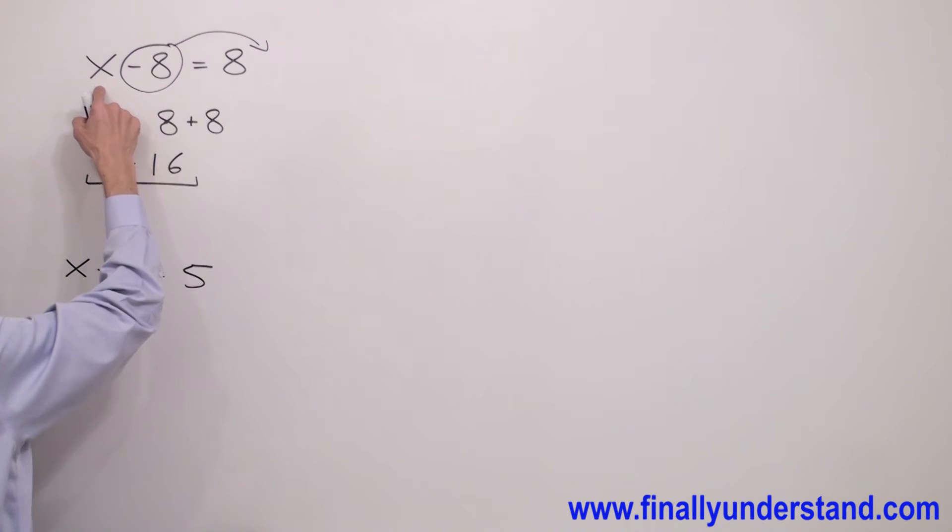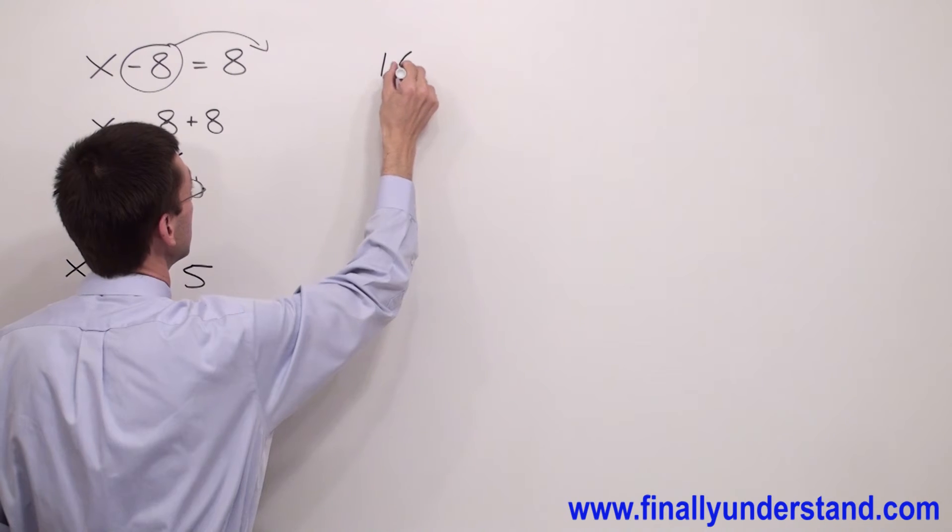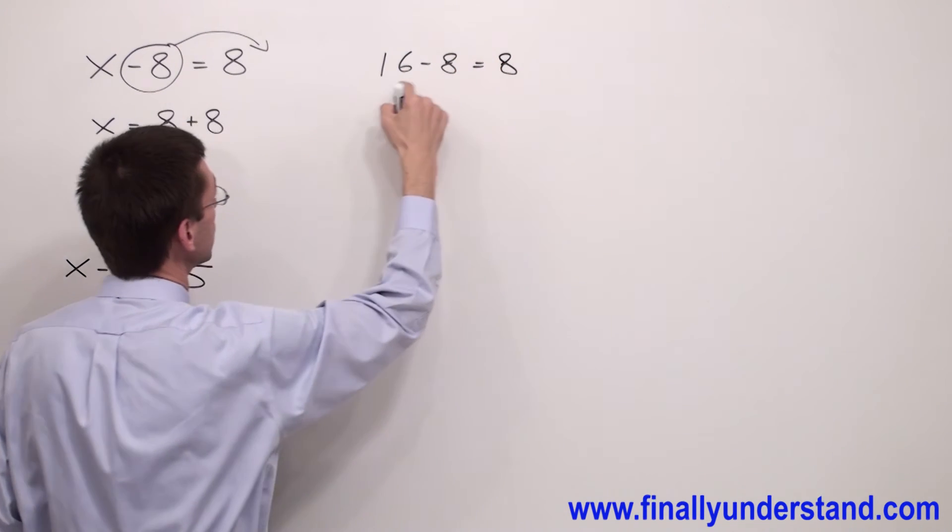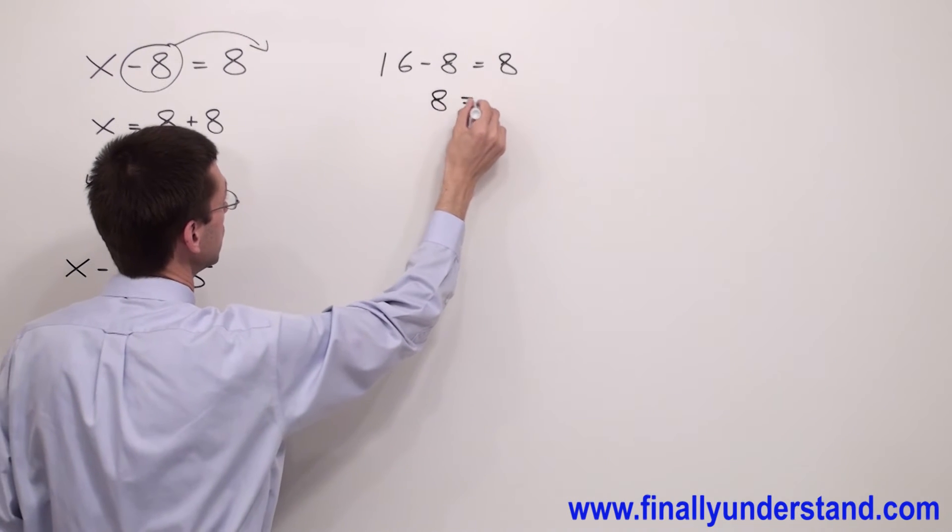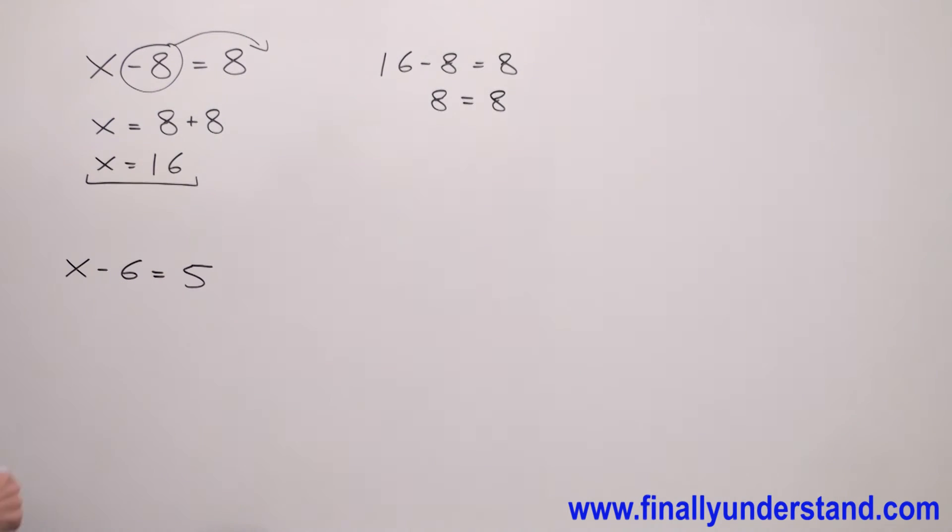Instead of this x, I simply have to write 16 in order to check my solution. I simply write 16 minus 8 equals 8. 16 minus 8 is 8. 8 equals 8. That's why this is the solution to my problem.